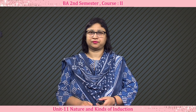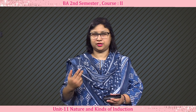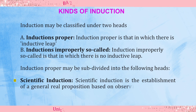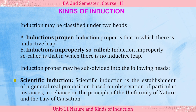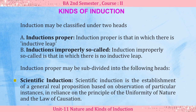What are the kinds of induction? There are two kinds: induction proper and induction improperly so-called. In induction proper, we come to the conclusion with the help of the inductive leap. In induction improperly so-called, we do not come to the conclusion with the help of the inductive leap. Induction proper can be further divided into three kinds: scientific induction, unscientific induction, and analogy.